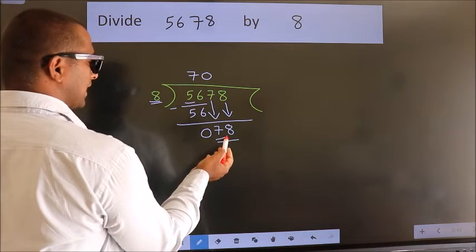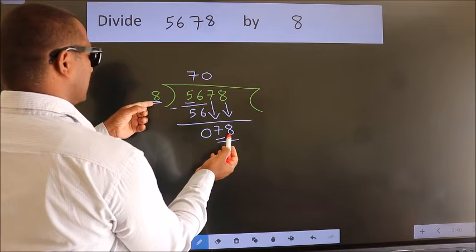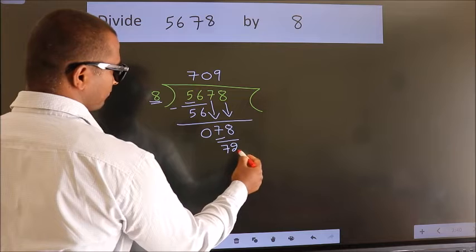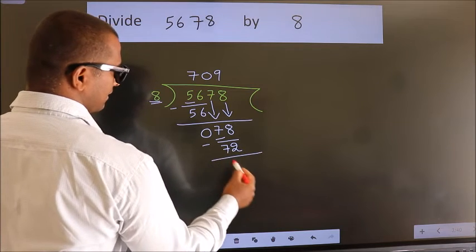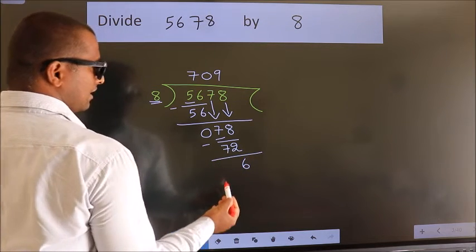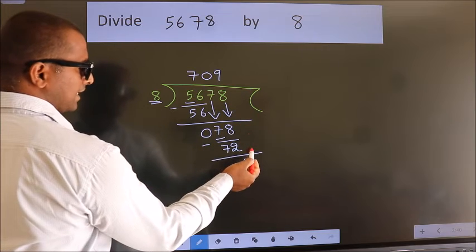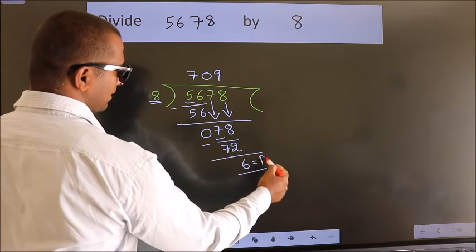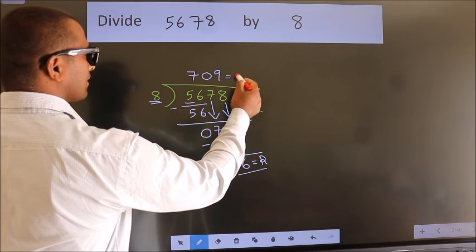A number close to 78 in the 8 table is 8 nines, 72. Now we subtract. We get 6. No more numbers to bring down. So we stop here. This is our remainder. This is our quotient.